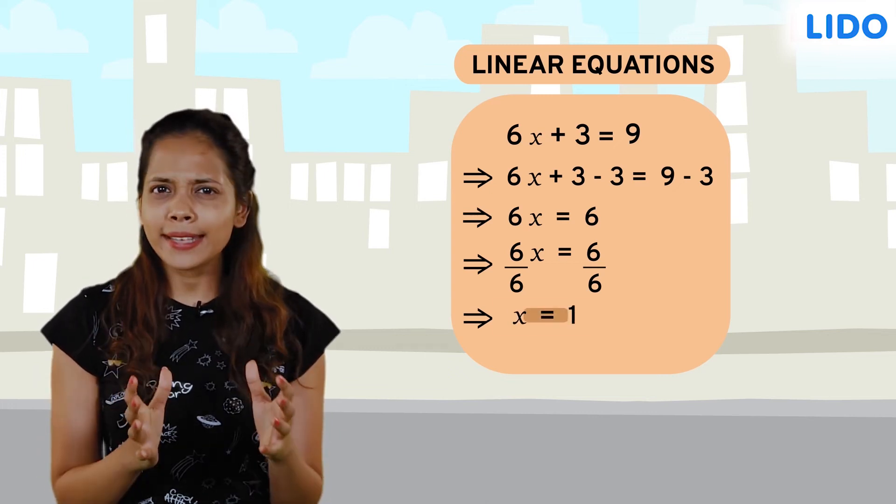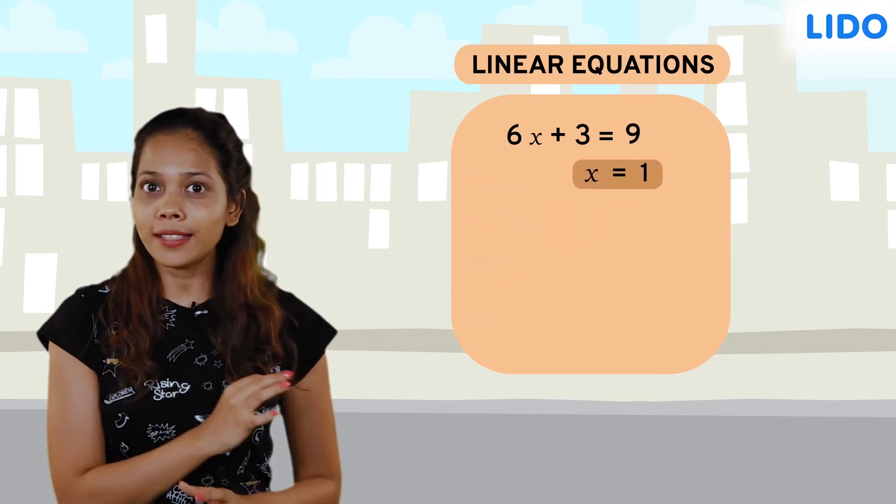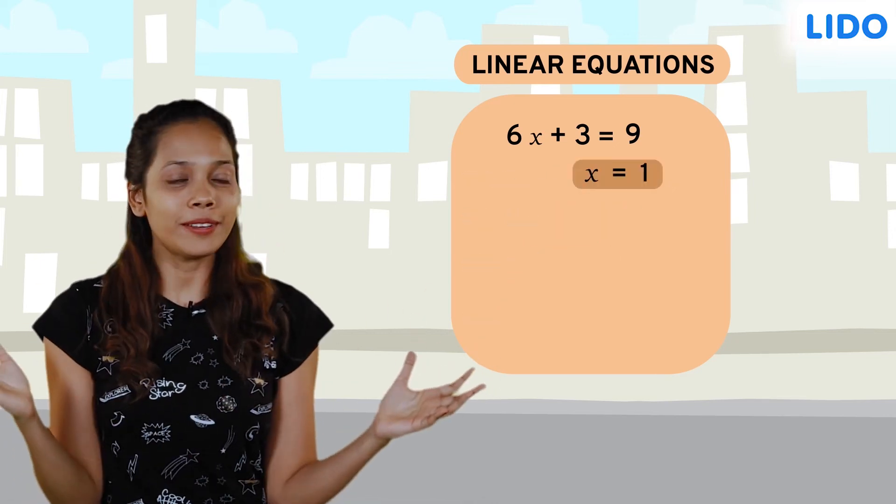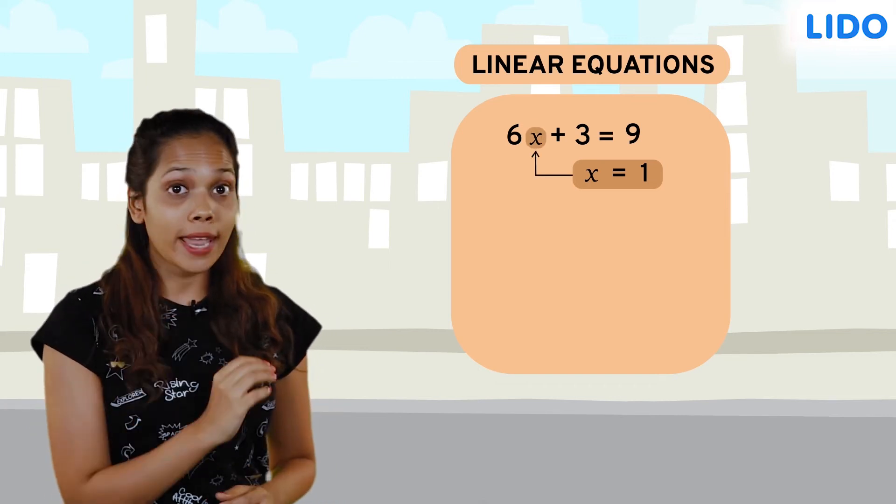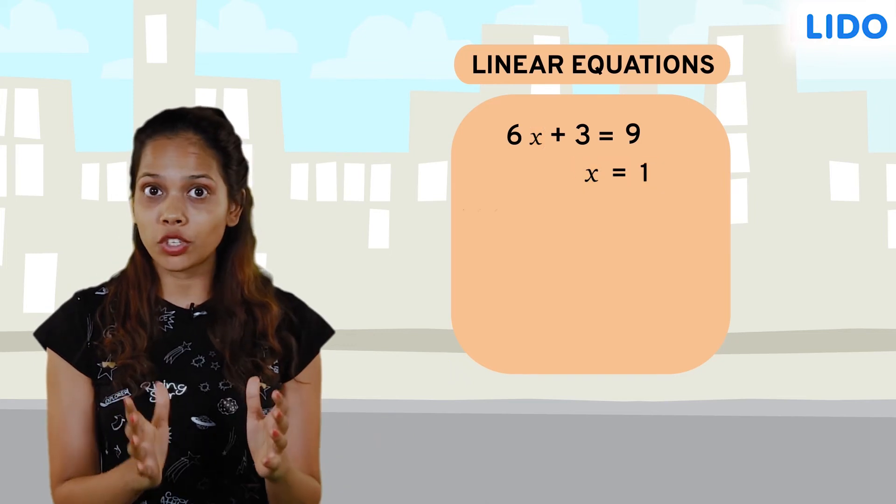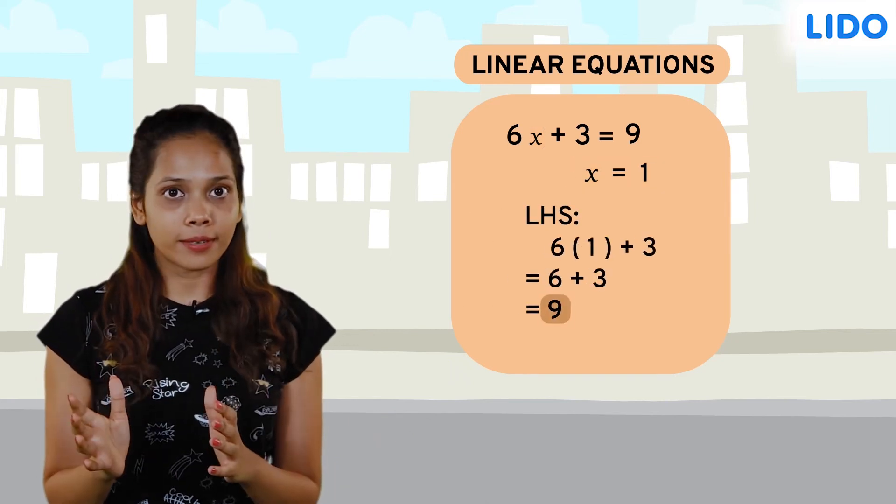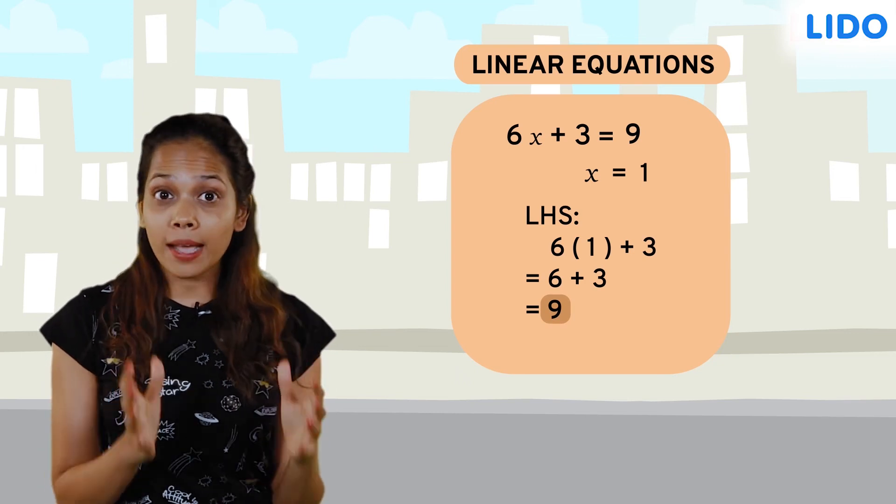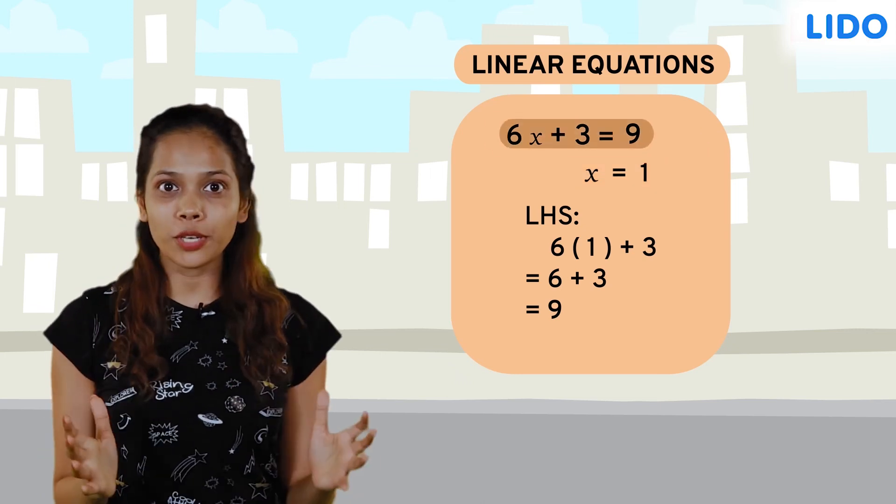And now with x standing all alone on one side and its value on the other side, we have our solution. To be more sure about our answer, let's substitute the value of x on the left hand side of the equation and simplify. Yes, we get 9 on the left side, which is the same as the number on the right hand side. Therefore x = 1 is the correct solution for our equation.